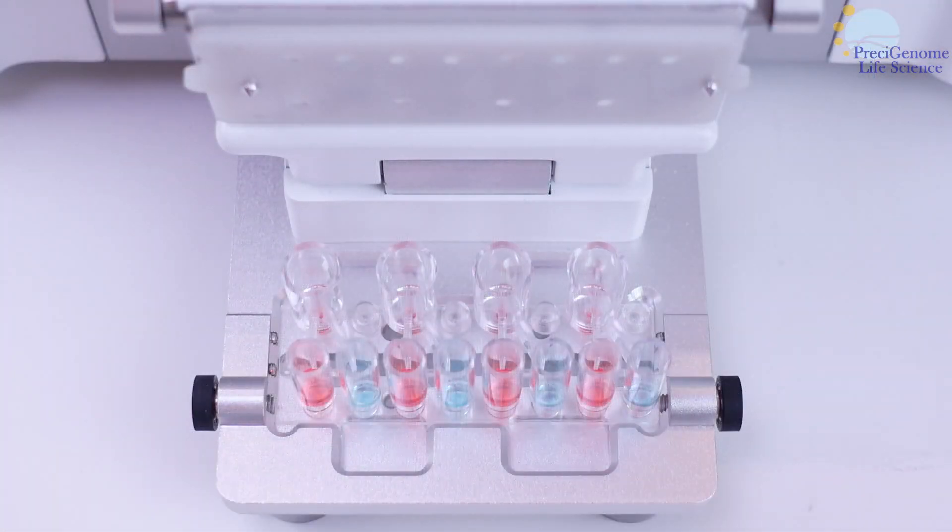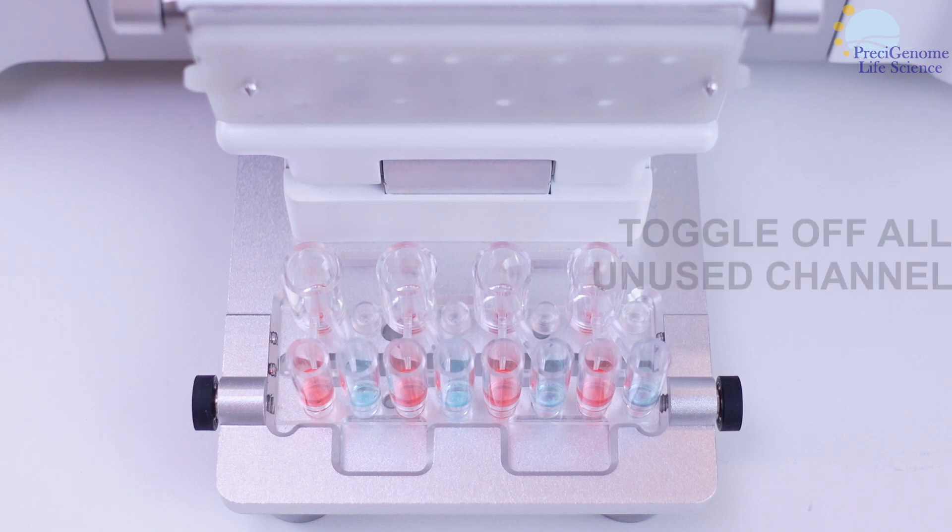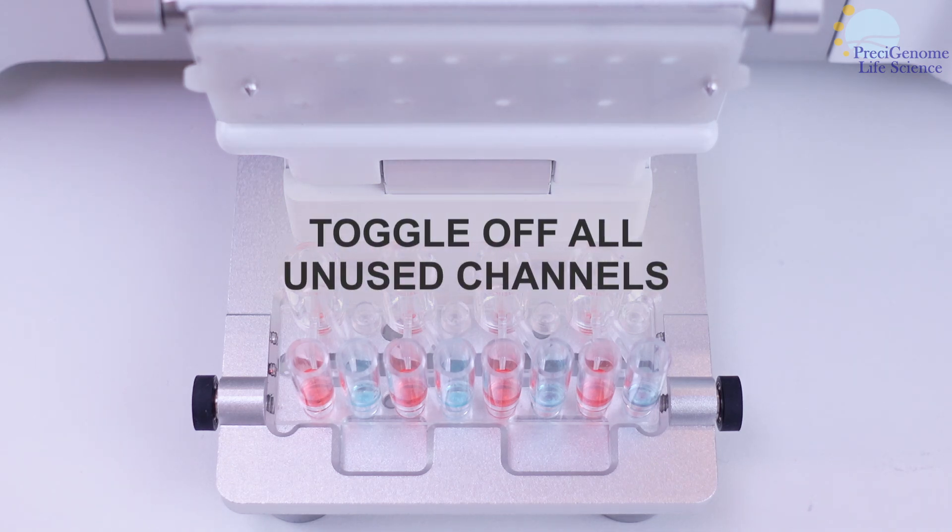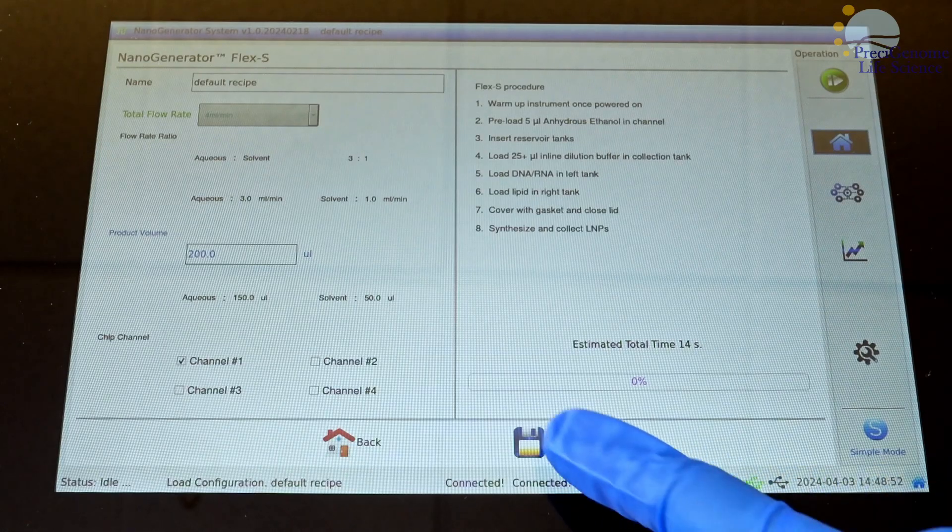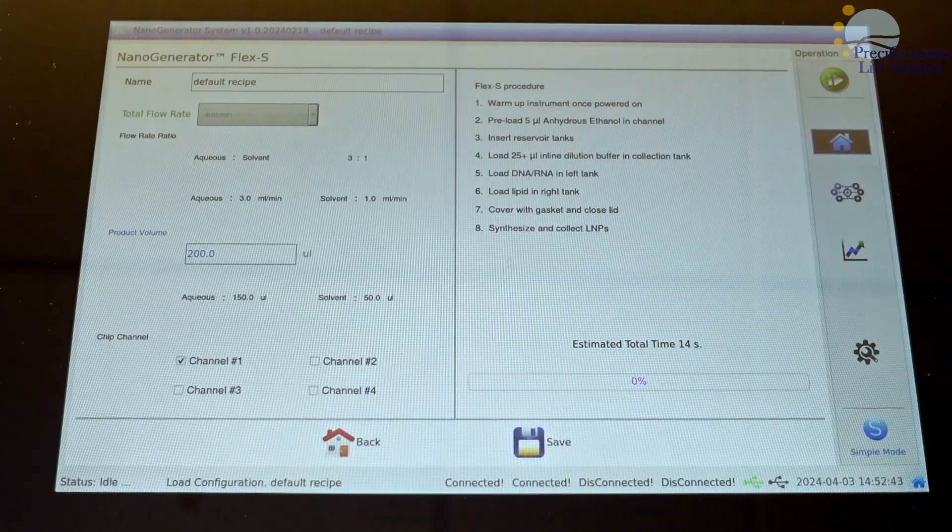While up to 4 channels may be used at once, keep all unused channels off to prevent air leakage. When you are done setting your parameters, simply save the recipe and it is ready to go.